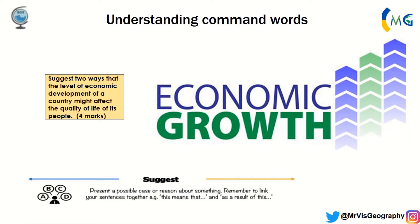When you 'suggest,' you have to present possible causes or reasons about an issue. Try to link ideas using phrases like 'this means that' or 'as a result.' For example: suggest two ways that the level of economic development of a country might affect the quality of life of its people. You get a mark per way and a mark per explanation. One example: economic growth allows people to get higher pay, which means more income at home, so they can spend more on housing, education, and diet. Suggest doesn't mean you have to be 100% right — you just have to make an assumption and back it up.